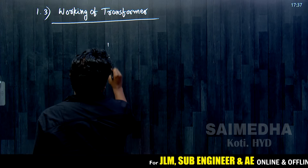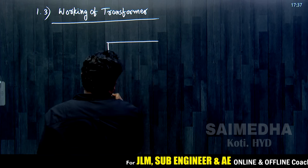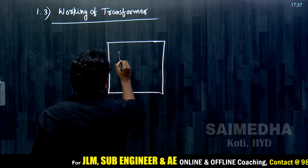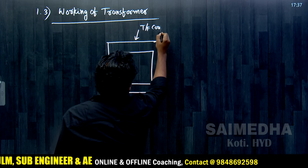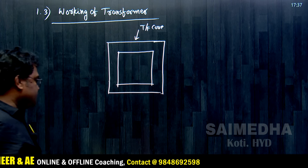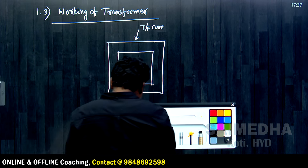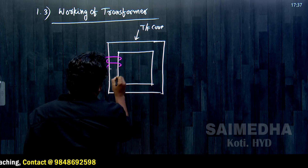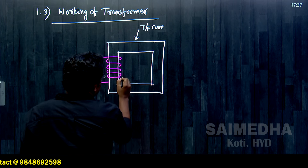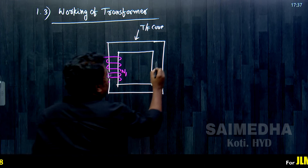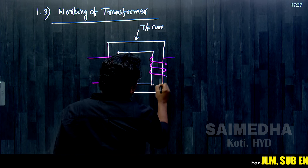Let us take the core first. The core is represented as a rectangular box. This is the transformer core, which is made with silicon steel. There are two windings. One winding is placed here — this is winding number 1 — and it has N1 number of turns.